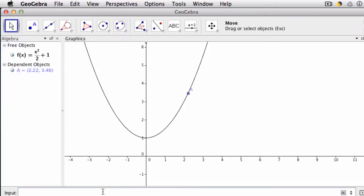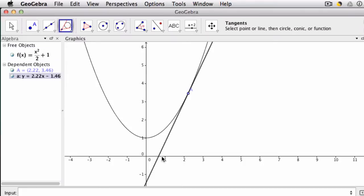Next thing I'm going to do is create a tangent line at point A. So set up my tangent, click point A, and then the parabola, and now that gives me the tangent line at point A for the function f.